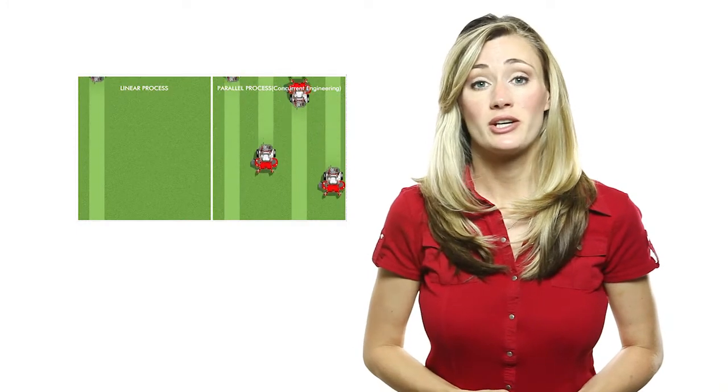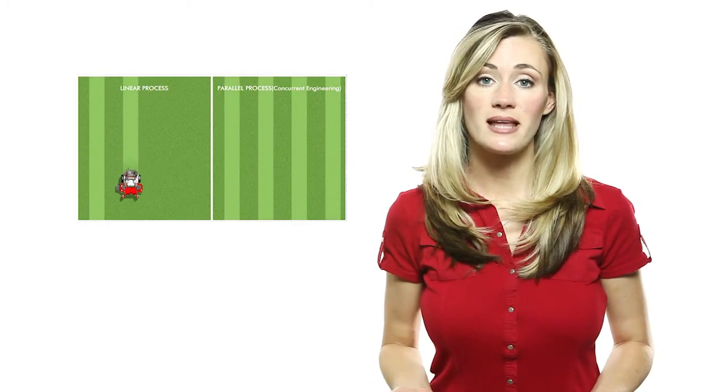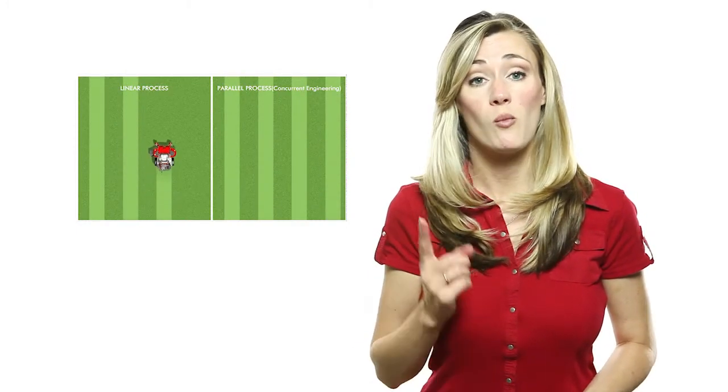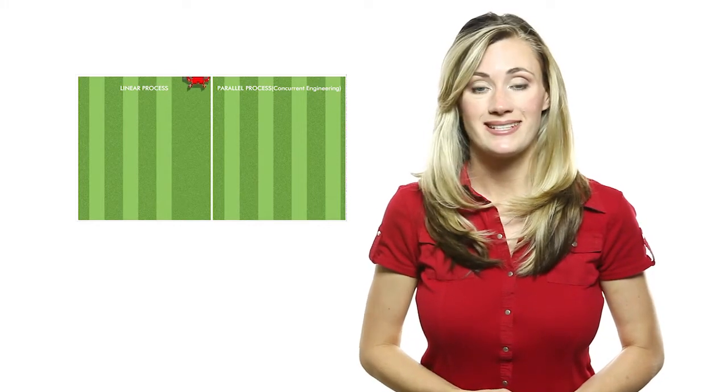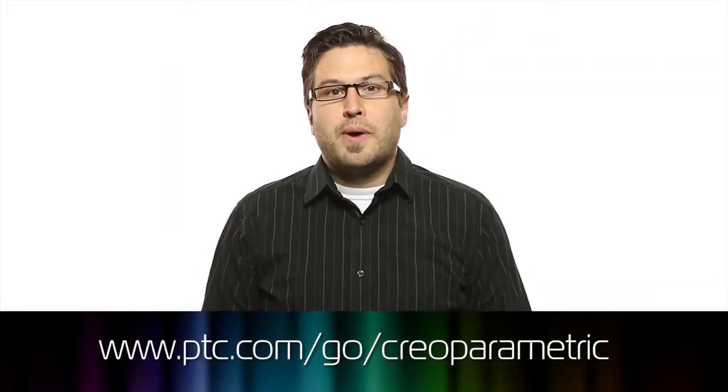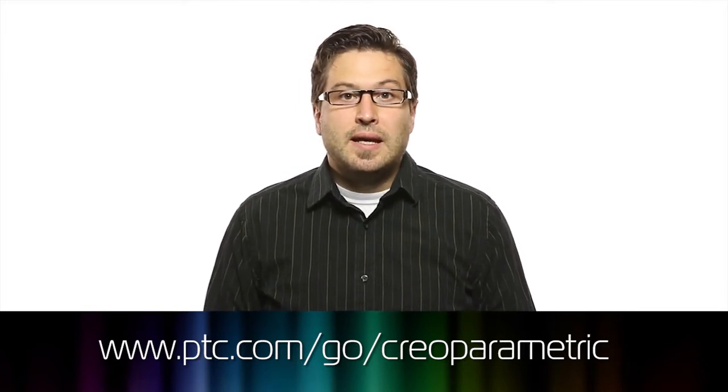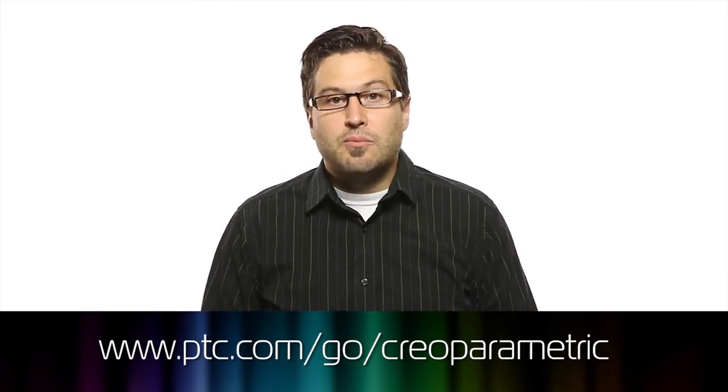Companies like Exmark use concurrent engineering, a process that allows multiple engineers to work on one digital product model at the same time. The makers of Creo Parametric, the same software that Exmark uses to design their tractors, can help you develop concurrent engineering processes.